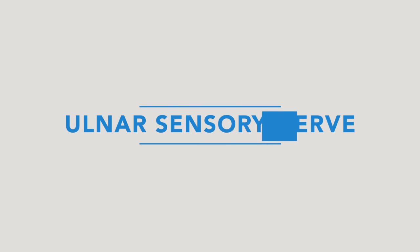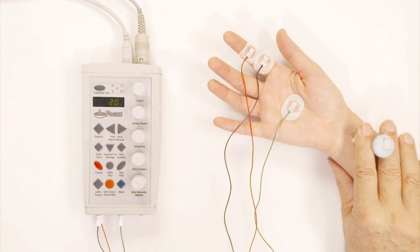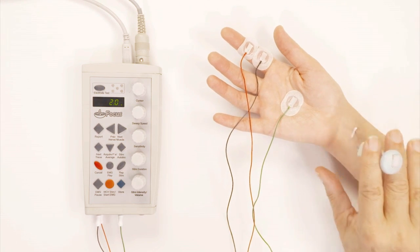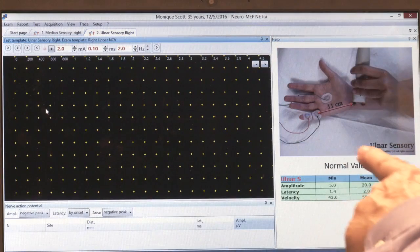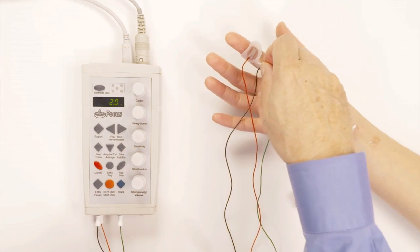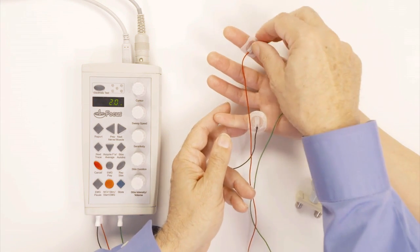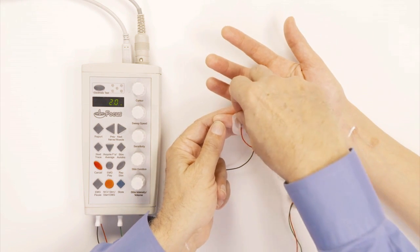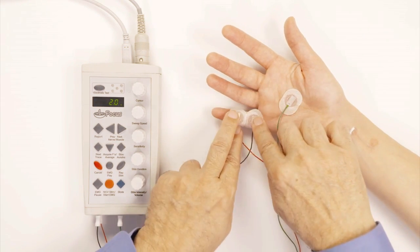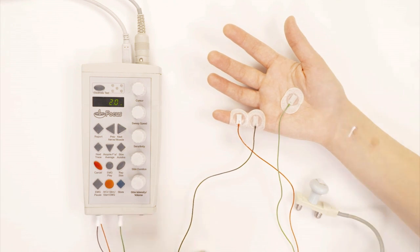So the next nerve that we're going to study is the ulnar sensory. You see from the setup that we're going to put the electrodes on the baby finger right here. I'm going to take the electrodes from the index finger to put them on the baby finger like this. And now you see where they are. I leave the ground exactly where it is.